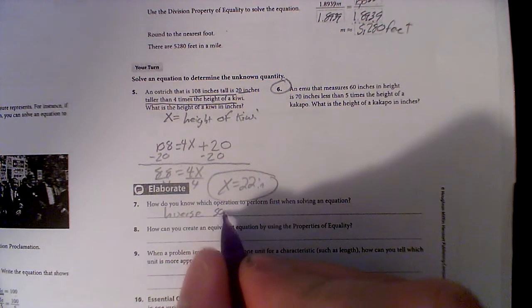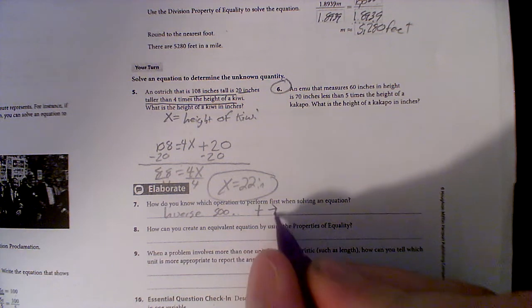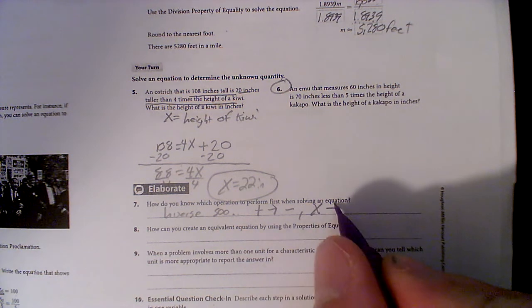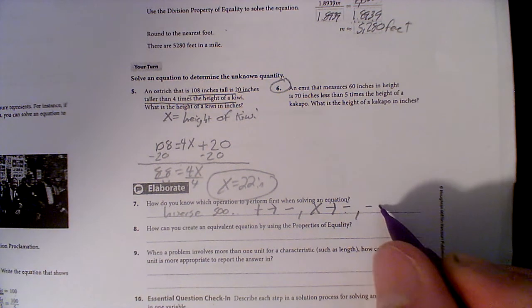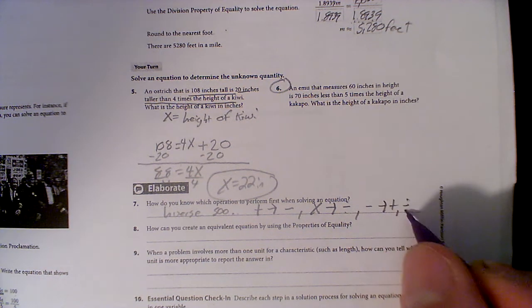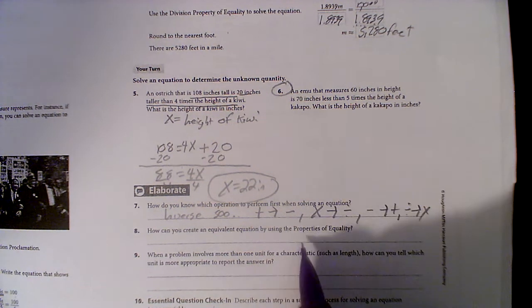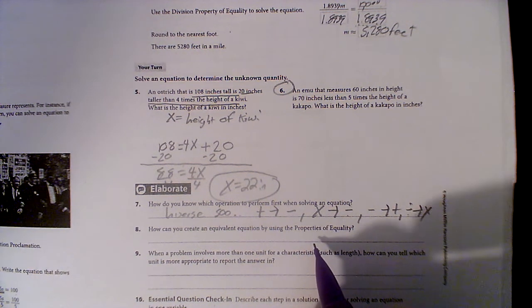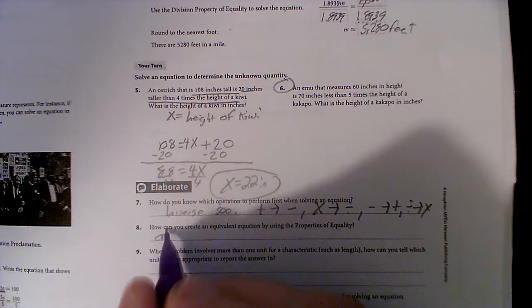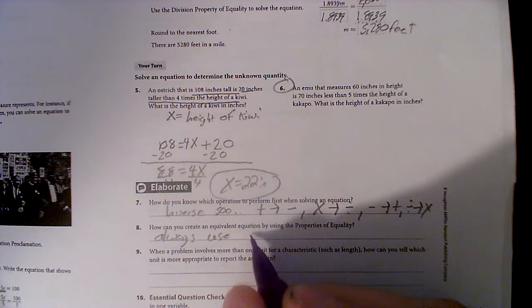So addition gives us subtraction, multiplication gives us division. Likewise, subtraction gives us addition and division gives us multiplication. How do you create an equation by using the properties of equality? Well, that's a great question - always use inverses.